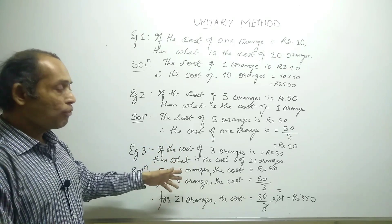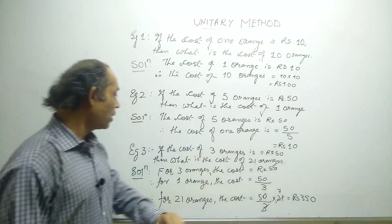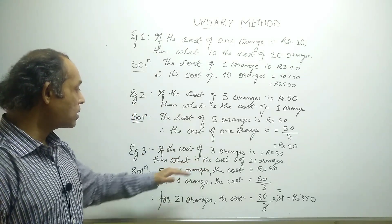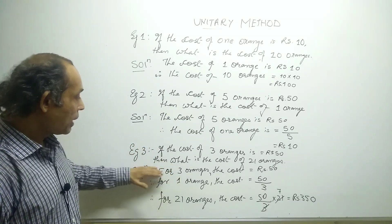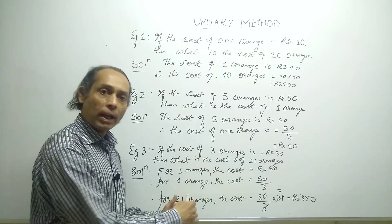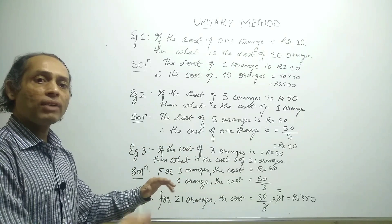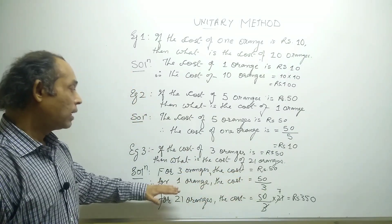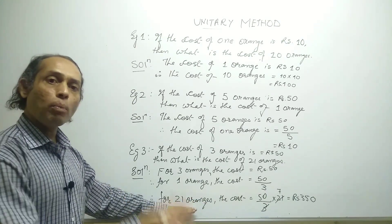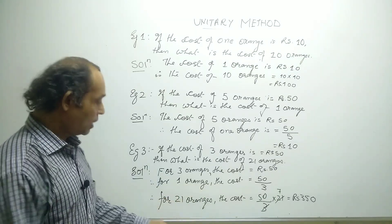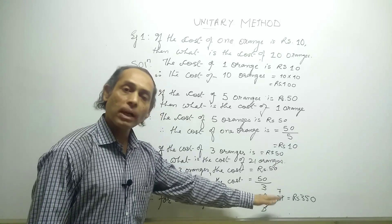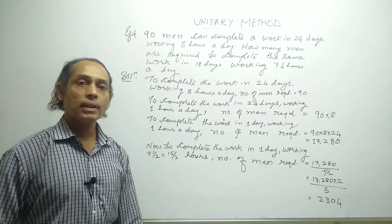Example three is a mixture of case one and case two. If the cost of three oranges is rupees 50, what is the cost of 21 oranges? First, going from many to one, the cost of one orange is 50 divided by 3. Then, going from one to many for 21 oranges, we multiply: 50 by 3 into 21, which gives rupees 350.